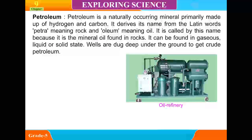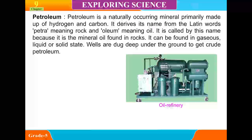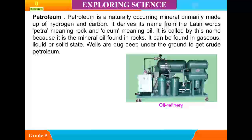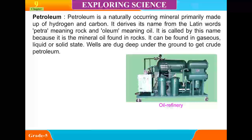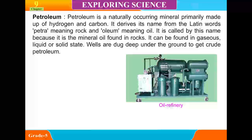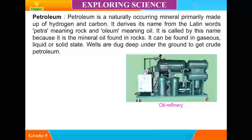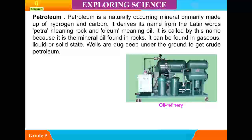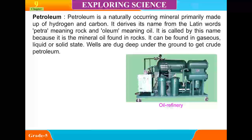Petroleum. Petroleum is a naturally occurring mineral primarily made up of hydrogen and carbon. It derives its name from the Latin words petra meaning rock and oleum meaning oil. It is called by this name because it is the mineral oil found in rocks. It can be found in gaseous, liquid or solid state. Wells are dug deep under the ground to obtain crude oil.